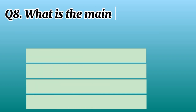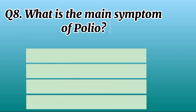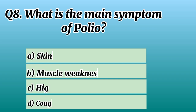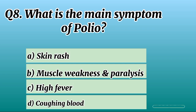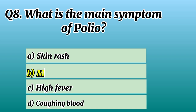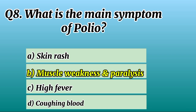Question 8. What is the main symptom of polio? Correct option B: Muscle weakness and paralysis.